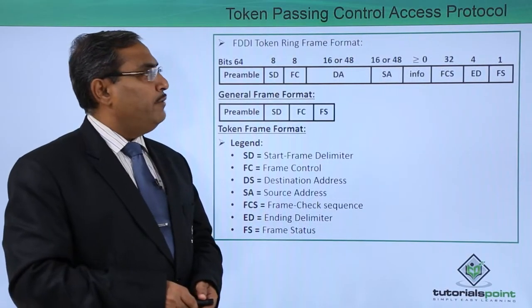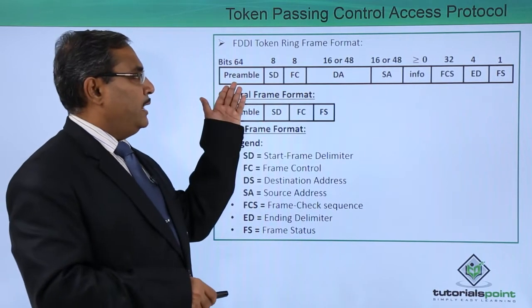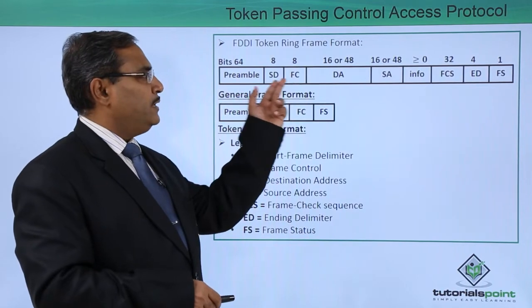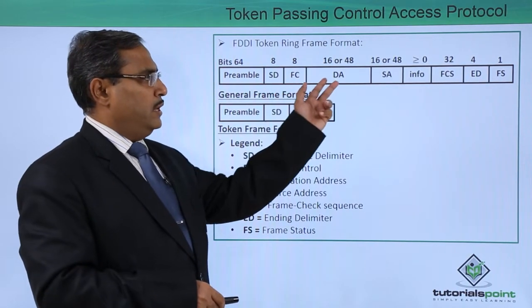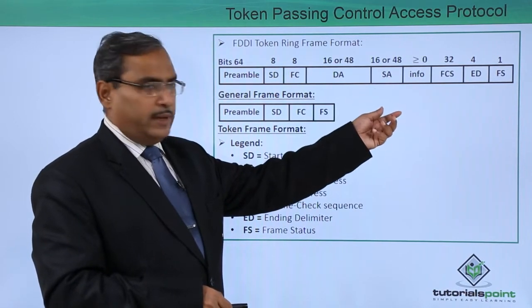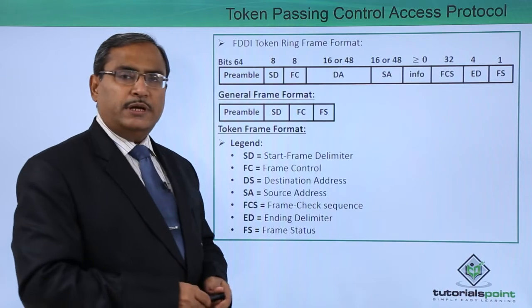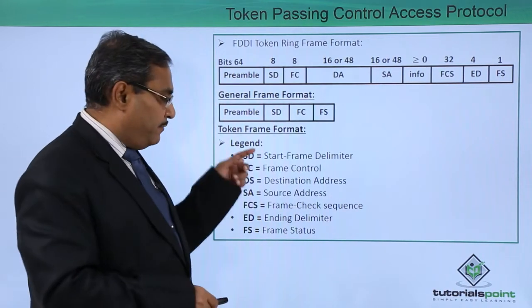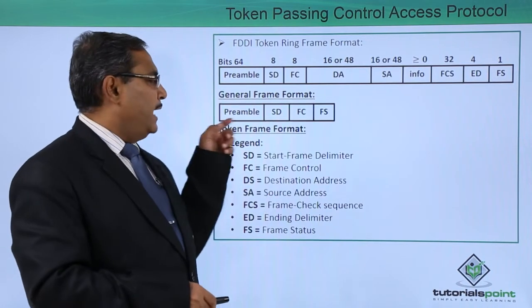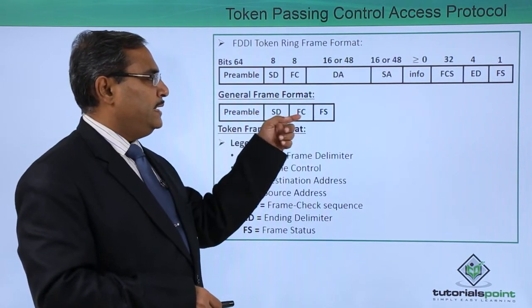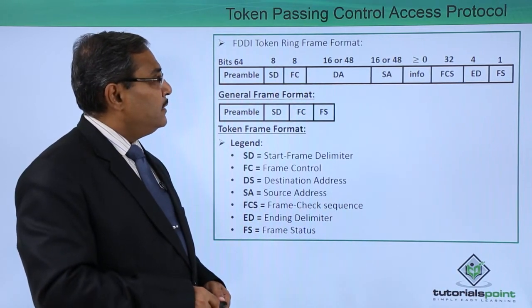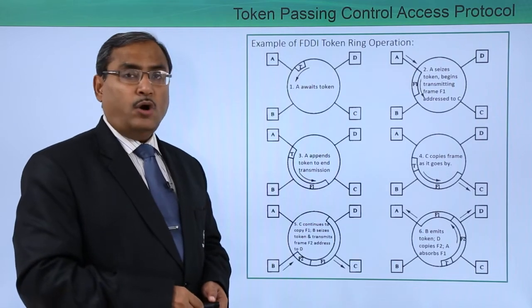This is the FDDI token ring frame format. We are having: preamble, start frame delimiter (SFD), frame control (FC), destination address, source address, information data, frame check sequence which is a 32-bit CRC code, ending delimiter, and frame status. That is the general data frame format. The token frame format consists of: preamble, SD, FC, and FS. This is the FDDI token ring operation.